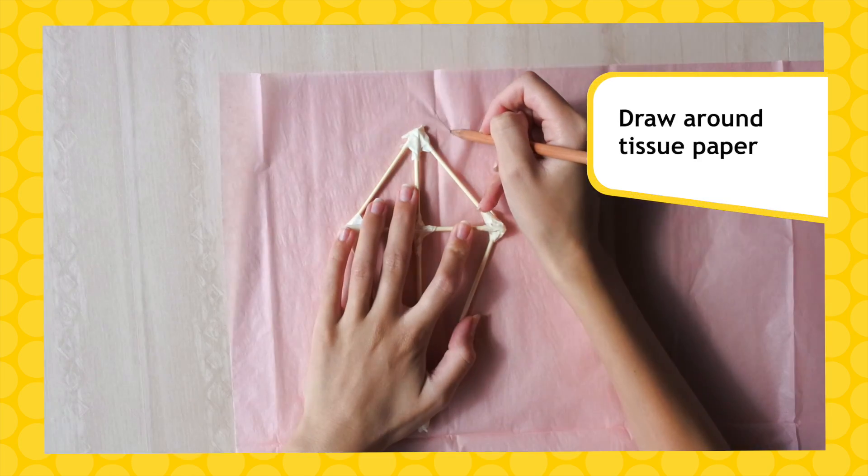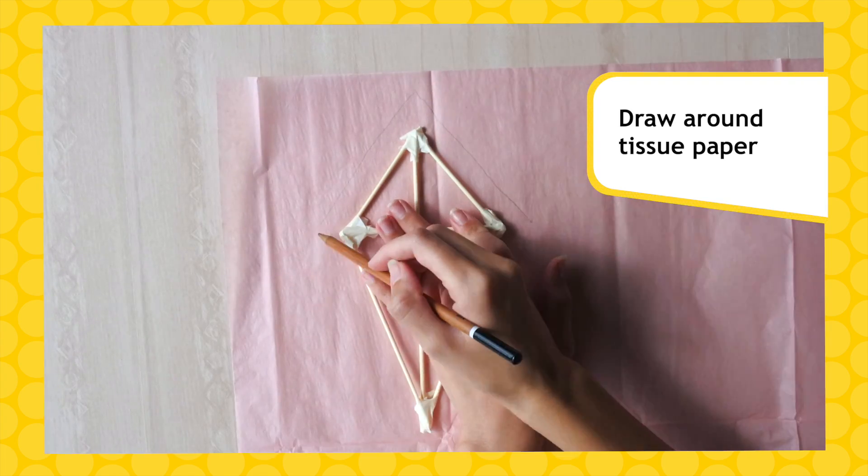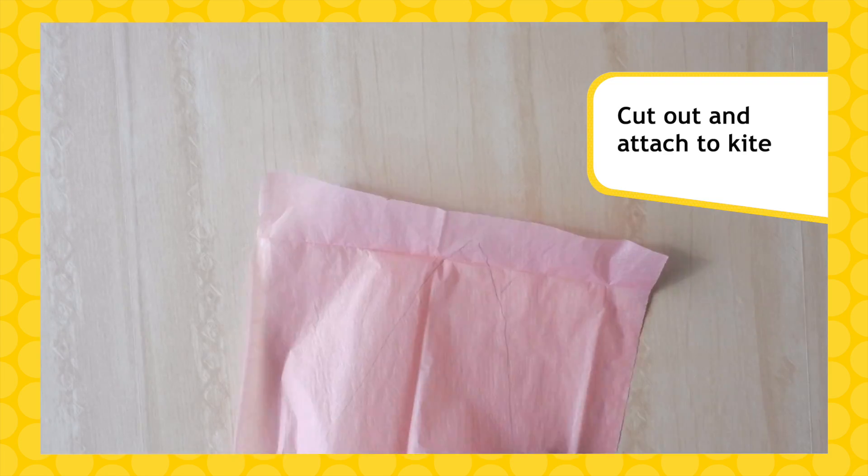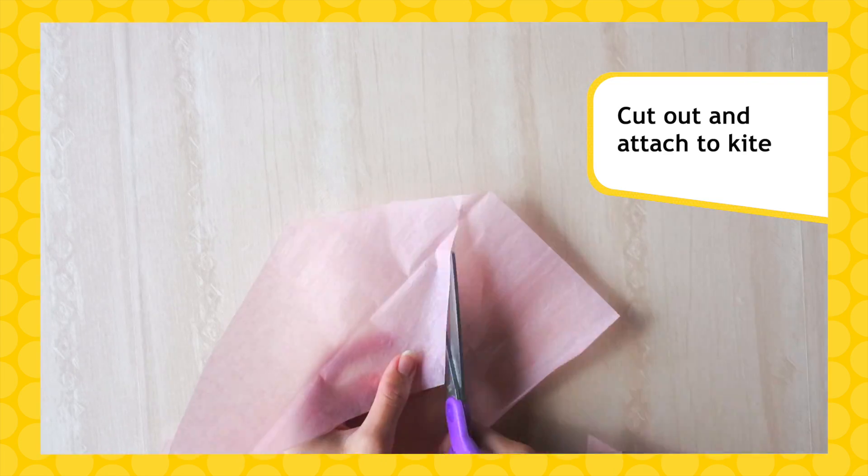Draw around tissue paper to make the kite 2 cm bigger than your diamond. Cut this out and attach it to your kite frame with glue, wrapping the extra paper around the frame.